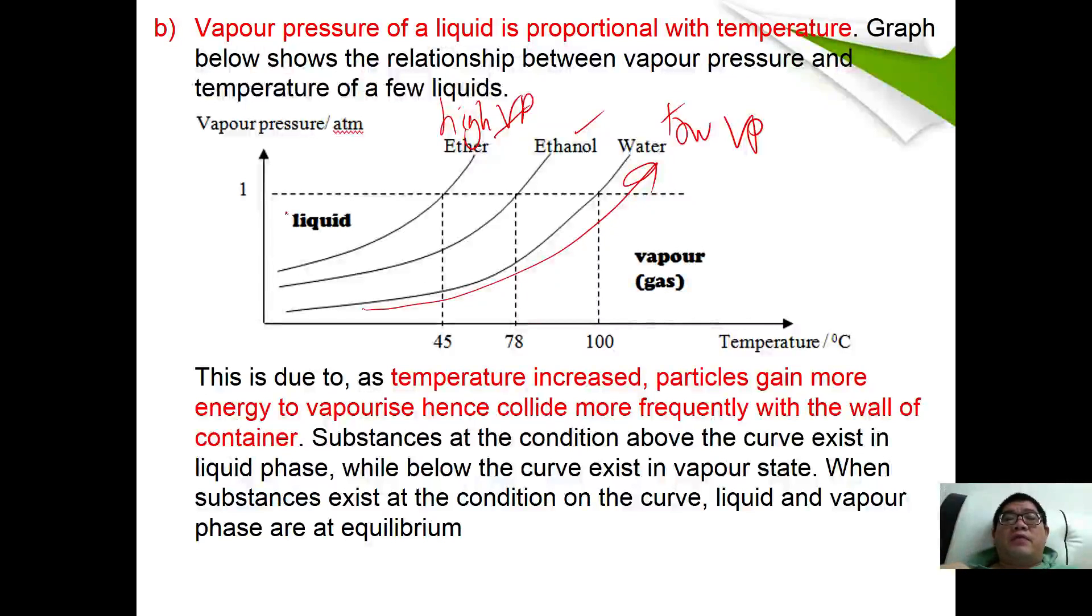Everything above the curve is liquid, and everything below the curve is gas. We want to understand why ether has the higher vapor pressure compared to ethanol and water.